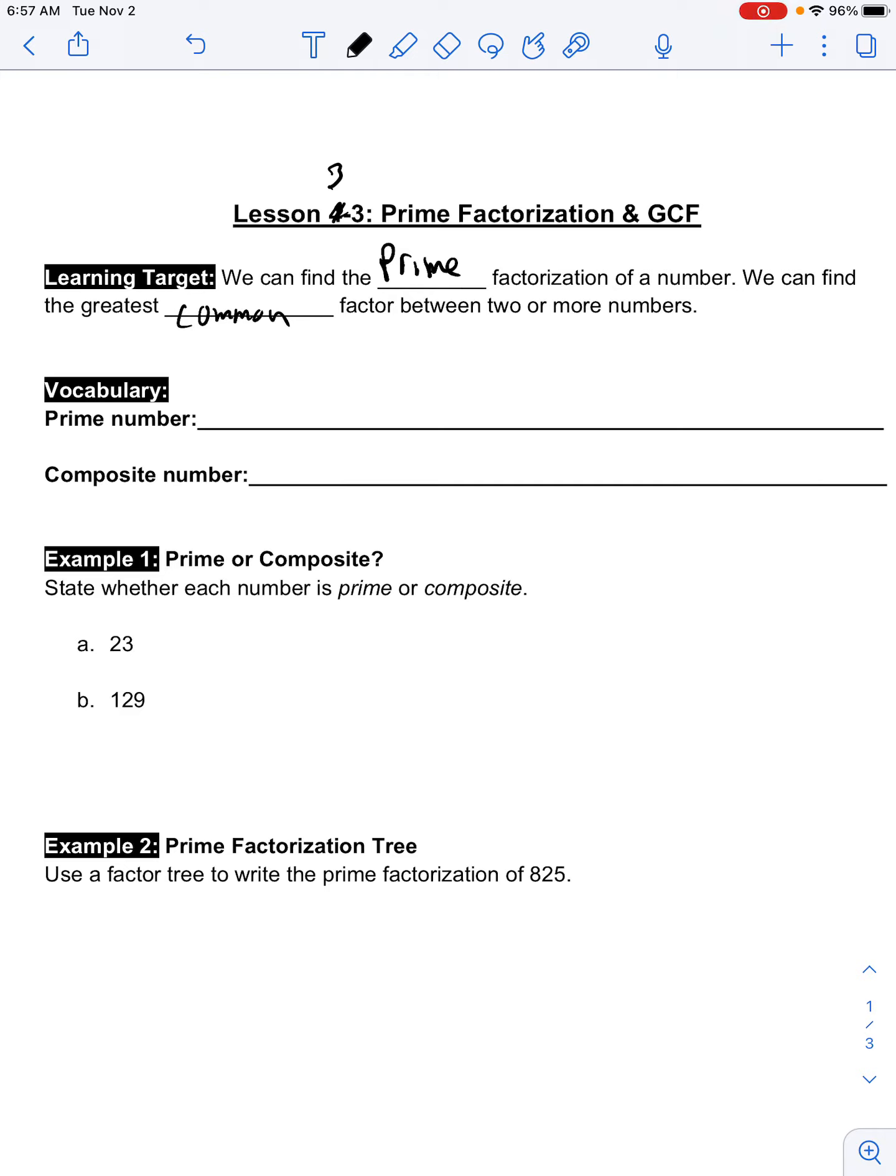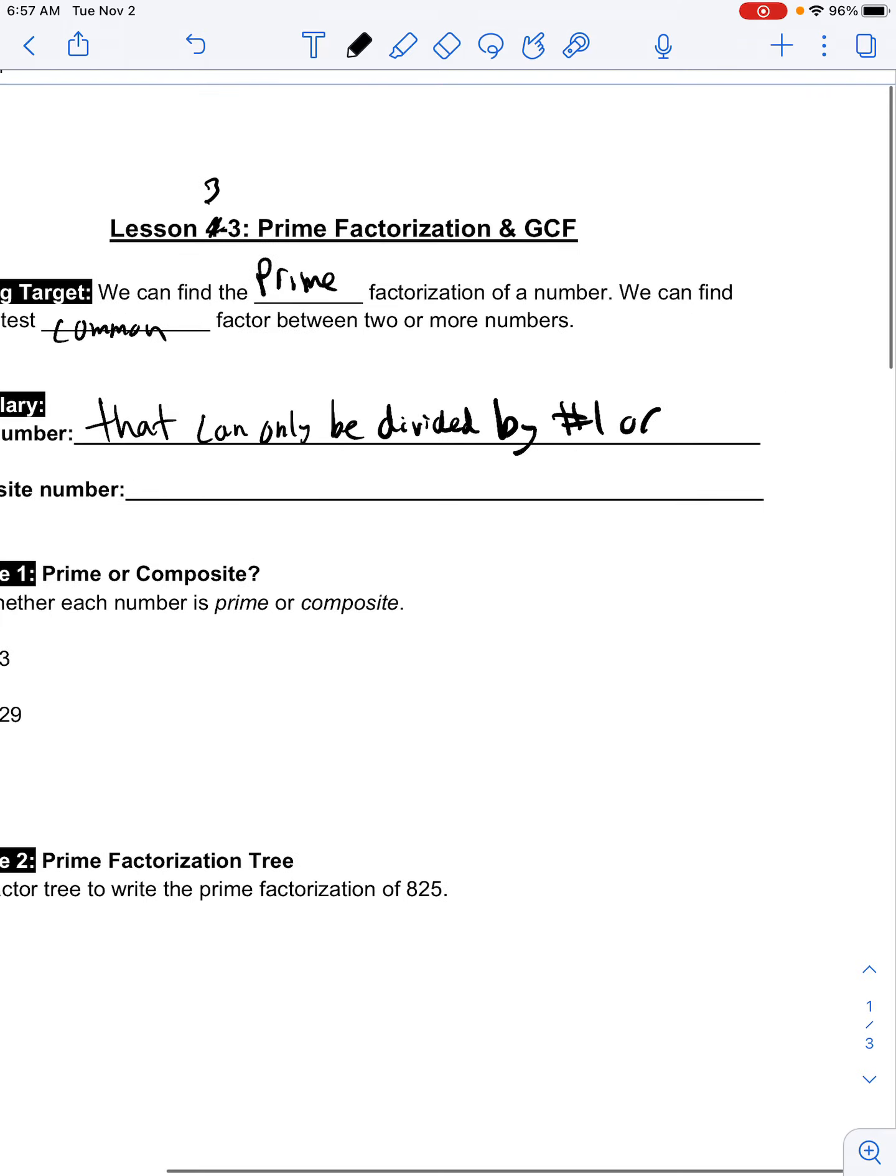A prime number is a number that can only be divided by number one or itself.